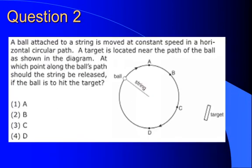We also have a ball attached to a string moving at a constant speed in a horizontal circular path. We have a target located near the circle. We want to know at which point along the ball's path the string should be released for the ball to hit the target. Remembering that the path of a ball once it's released will be tangent to the circle — releasing at point B should hit the target. We take away the tension in the string causing the centripetal force, and the ball continues in a straight line as noted by Newton's first law.